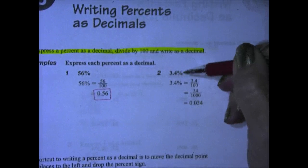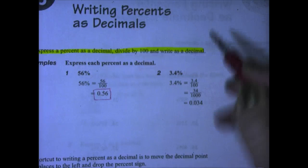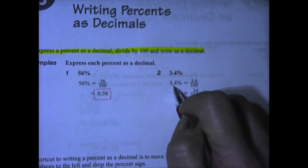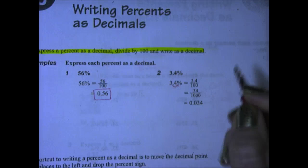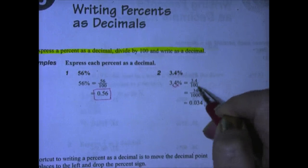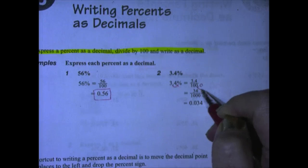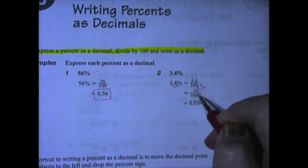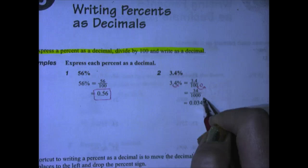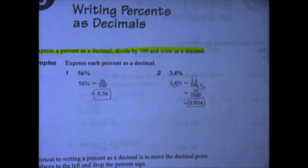3.4% is a little bit more difficult because I have to move my decimal point one to the right and make it 34, which means I have to take this decimal point and move it one to the right and make it 1,000. So now I have 34 over 1,000, and that is written as 0.034.